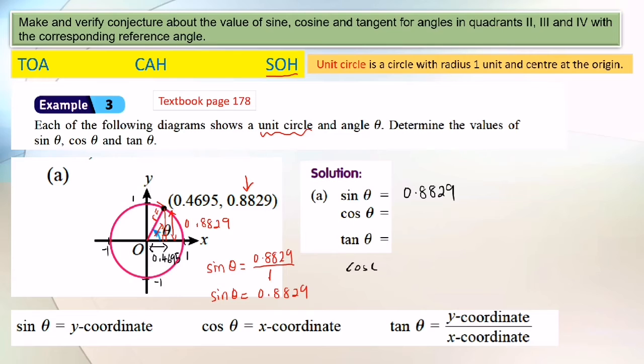So adjacent over hypotenuse: 0.4695. Cosine theta equals 0.4695 over hypotenuse. The length of hypotenuse actually is radius equals 1, so that's why cosine theta equals 0.4695, which is the x-coordinate.